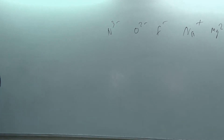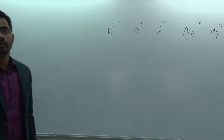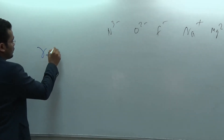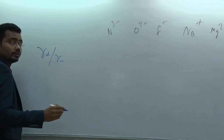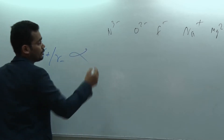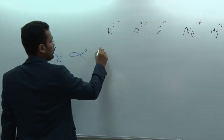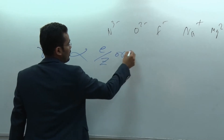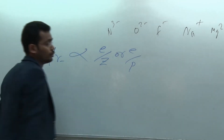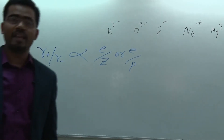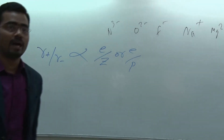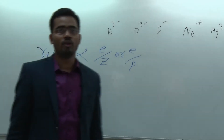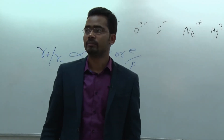For finding the radius for any compound, you have to find r-plus or r-minus, which is directly proportional to the e/p ratio. For any substance, if the e/p ratio is greater, then r-cationic or r-anionic will be higher.